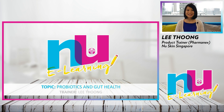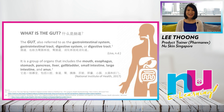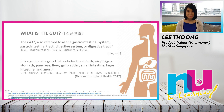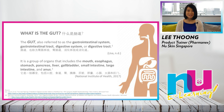First of all, what is gut health? The gut, also referred to as the gastrointestinal system, gastrointestinal tract, digestive system, or digestive tract, is basically a group of organs that include your mouth, esophagus, stomach, pancreas, liver, gallbladder, small intestines, large intestine, and anus — where food digestion and absorption take place.